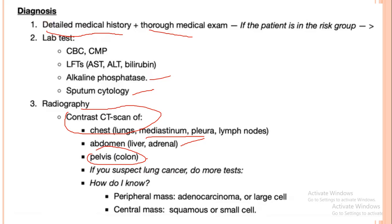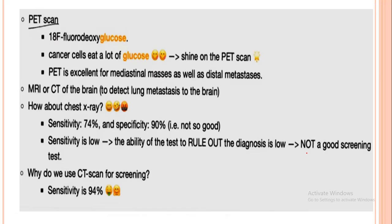When lung cancer is suspected, the location gives a clue: if peripheral, suspect adenocarcinoma or large cell cancer. If centrally located, suspect squamous cell or small cell lung cancer. Don't forget this tip.